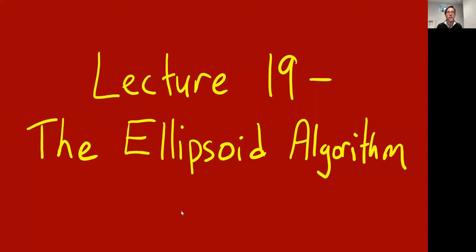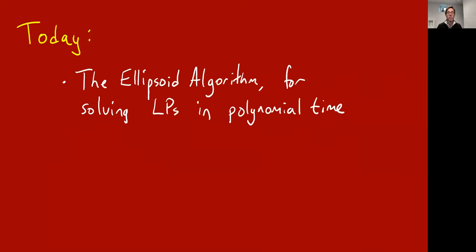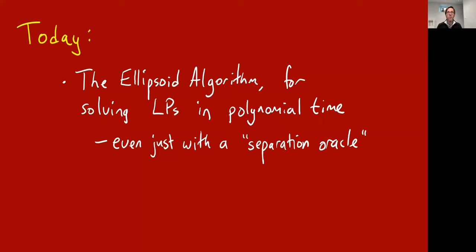Hello everyone, this is lecture 19 about the ellipsoid algorithm. We've seen a couple of lectures on linear programming and referred to the fact that it is solvable in polynomial time. The algorithm that can solve it in polynomial time is this ellipsoid algorithm. Today we're going to cover a couple of things: first, the ellipsoid algorithm for solving linear programs in polynomial time, and we'll also see that it can solve linear programs when they're not fully given explicitly — they merely have a separation oracle.